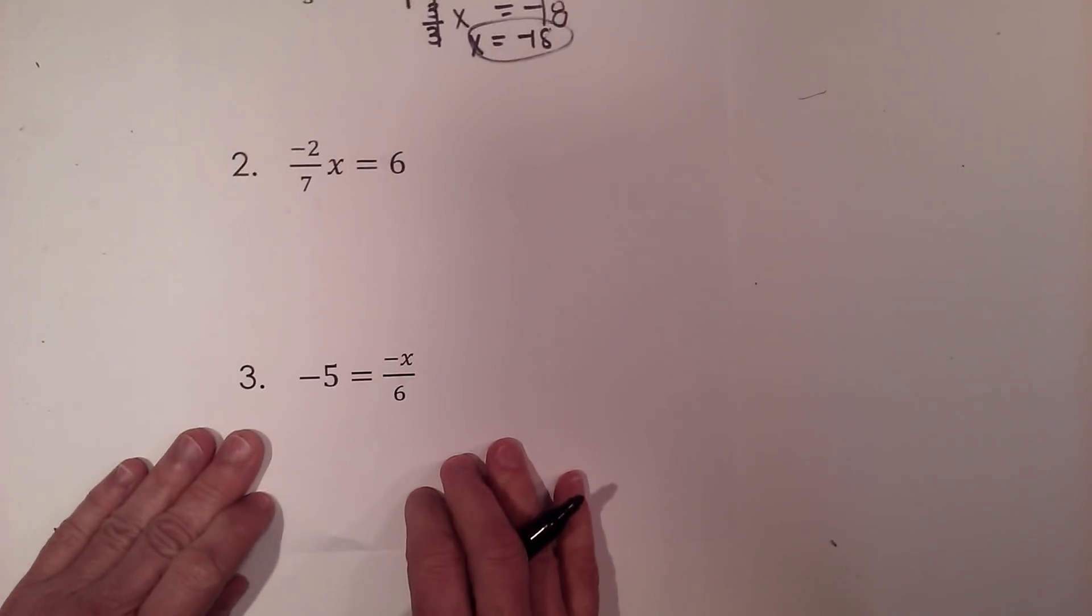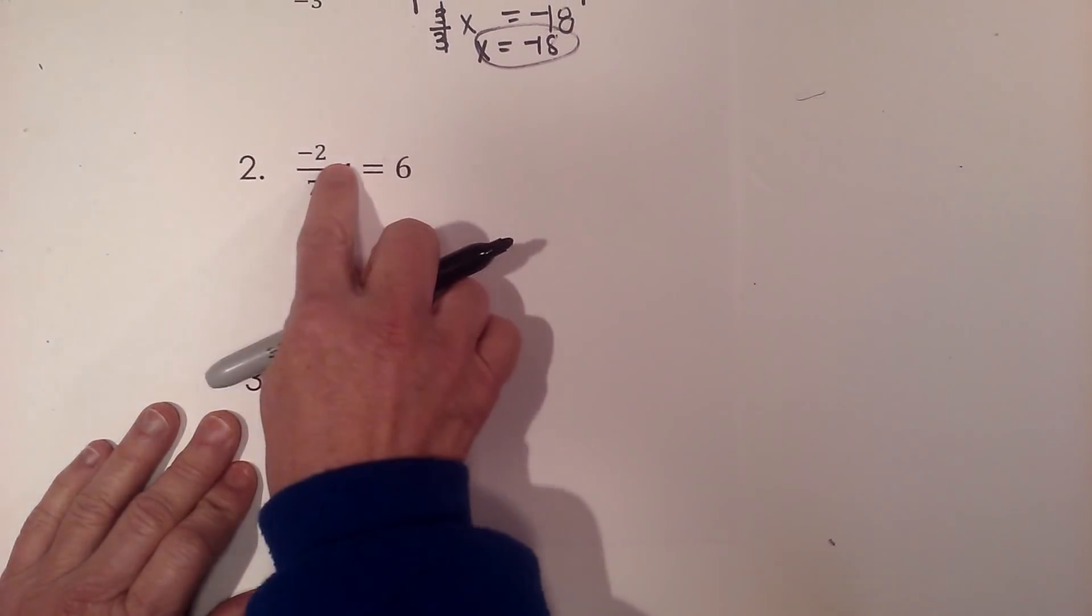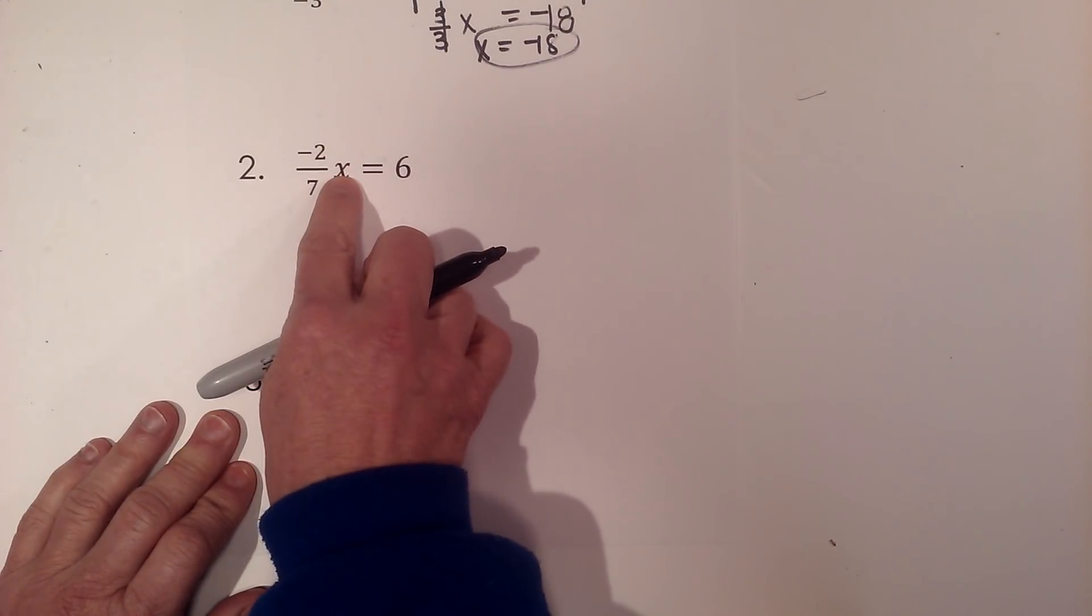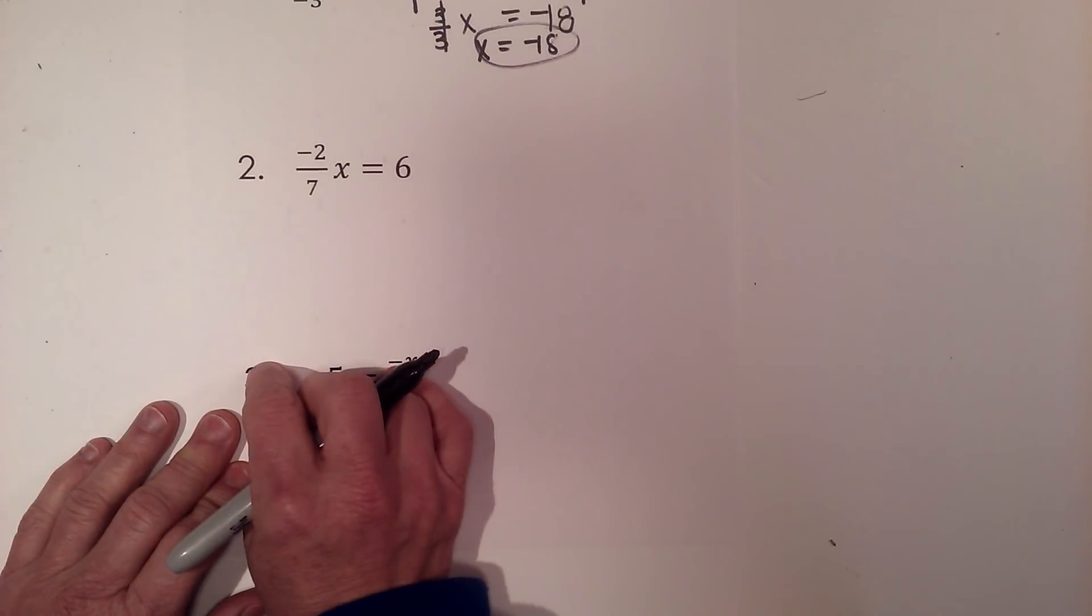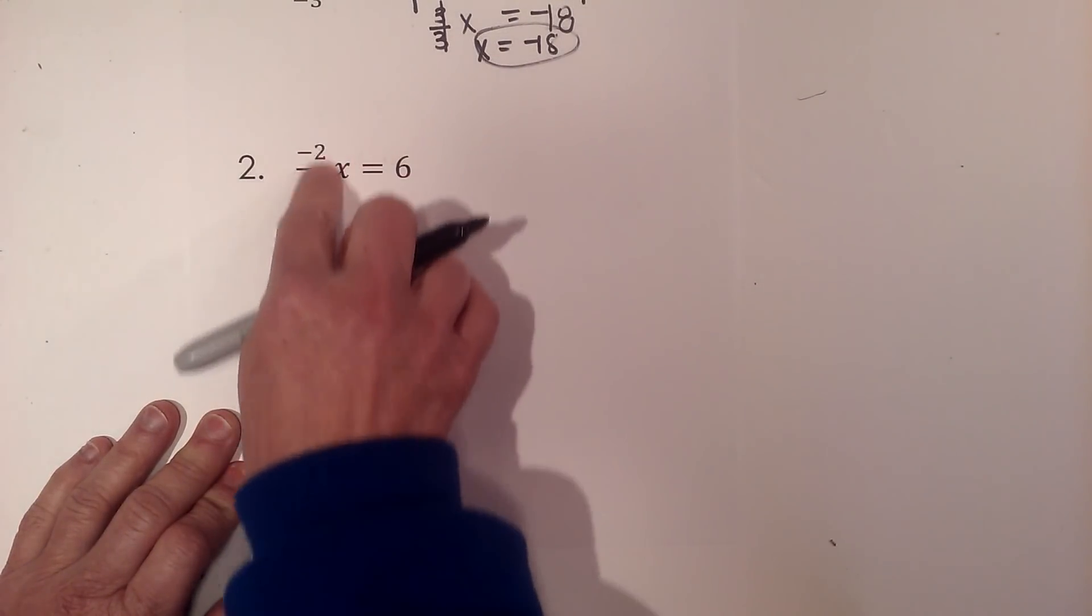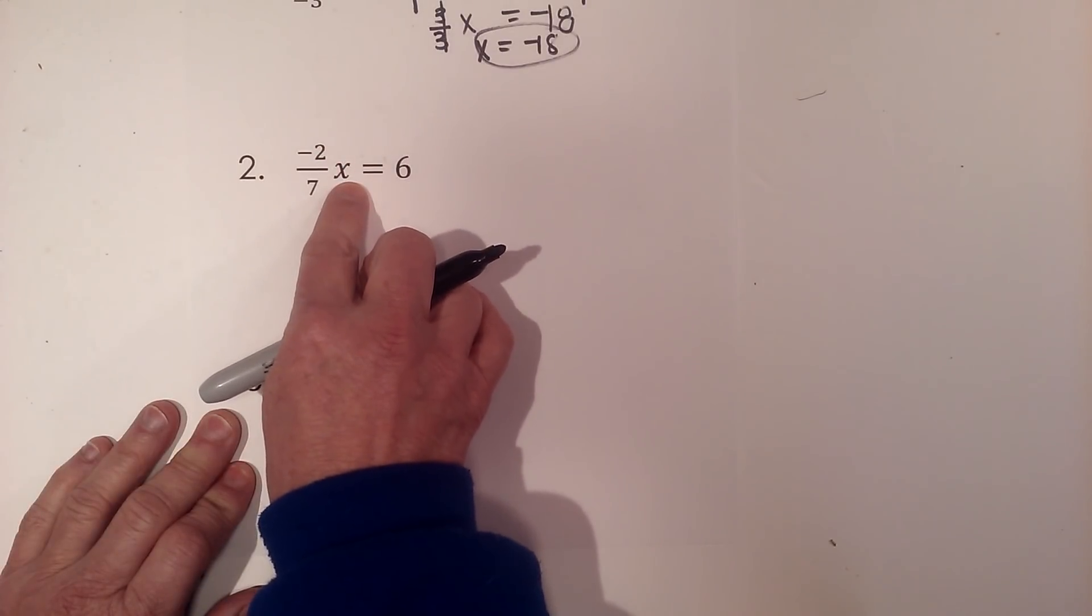Now let's look at a second example. This time I don't have to pull the fraction out in front because it's already written in front. The x can be next to it or on top, but in this example the x is right next to it.